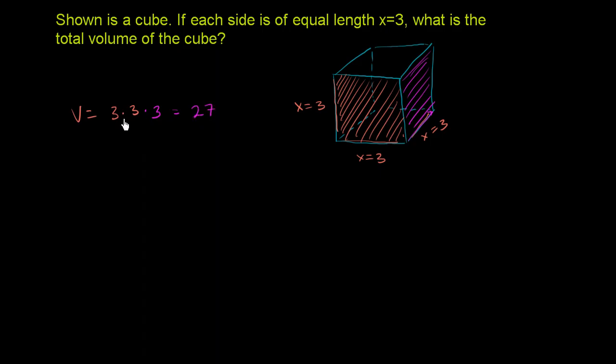Or you might recognize this from exponents. This is the same thing as 3 to the third power. And that's why sometimes, if you have something to the third power, they'll say you cubed it. Because literally, to find the volume of a cube, you take the length of one side, and you multiply that number by itself three times. One for each dimension.